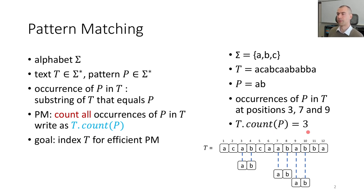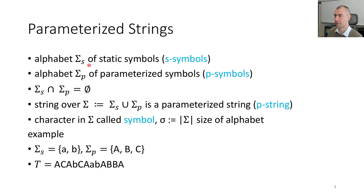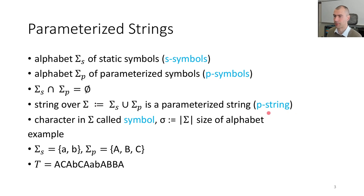We look at an extended version where we consider parameterized strings. We keep the alphabet sigma as sigma_s for the static symbols, also called s-symbols. And we define a new alphabet for the parameterized symbols, called sigma_p for the p-symbols. These alphabets are disjoint, and we define their union as sigma. We define strings on this alphabet sigma, which are called p-strings. Instead of speaking of characters, we call any element of sigma a symbol.